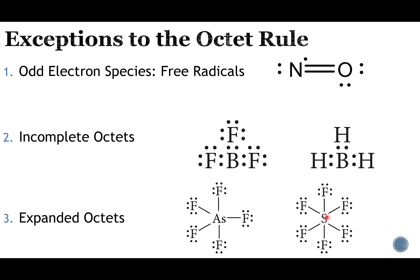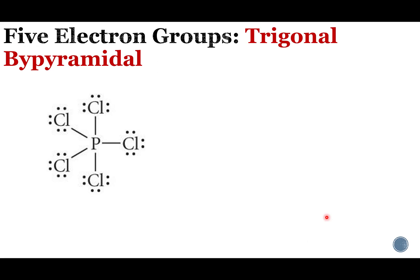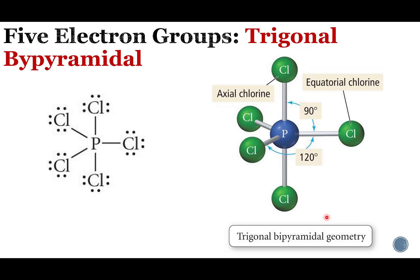With these expanded octets, we've got some new geometries to consider — that's what we're going to finish this slideshow with. If we have five electron groups attached to the central atom, we're going to have something called trigonal bipyramidal. The trigonal part: we've got three atoms in the same plane forming a triangle — think of those as the base of pyramids. Then we have a pyramid going up to the top atom and a second pyramid pointing down, so two pyramids sharing that triangle base.